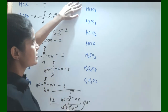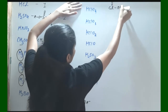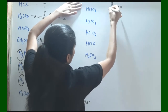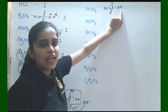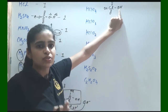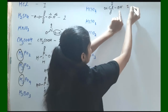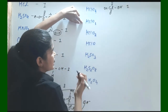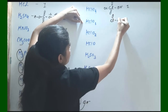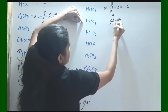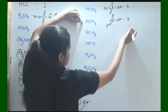Next is HClO₄. Its structure has Cl with double bond O, OH, double bond O, and double bond O. Only 1 hydrogen connected with oxygen — so it is easily replaceable. Its basicity is equal to 1. Same way, HClO₃ has structure Cl with double bond O, OH, and double bond O. Its basicity is 1.